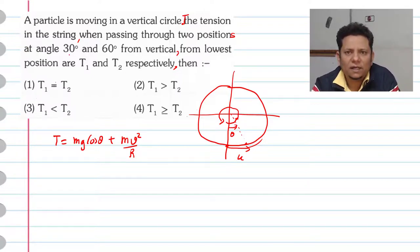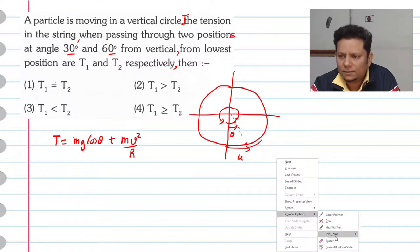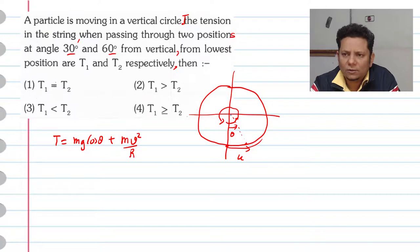Your particle is here. So we're talking about one location which will be at 30 degrees, and the second value will be here at 60 degrees.